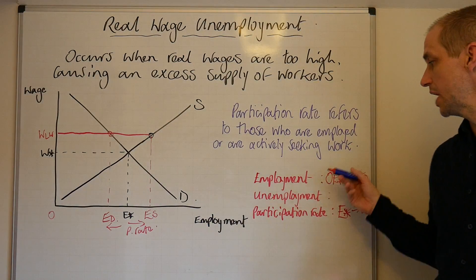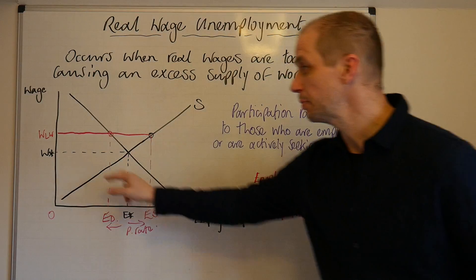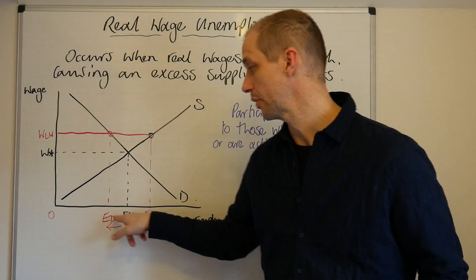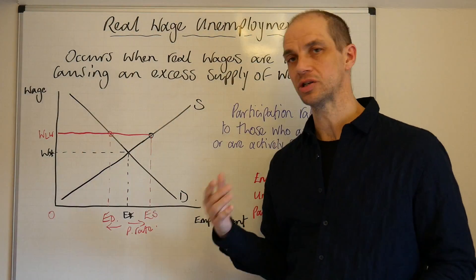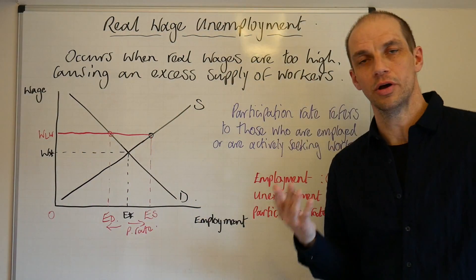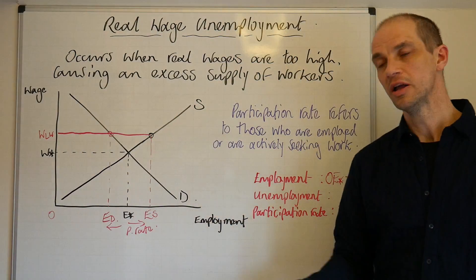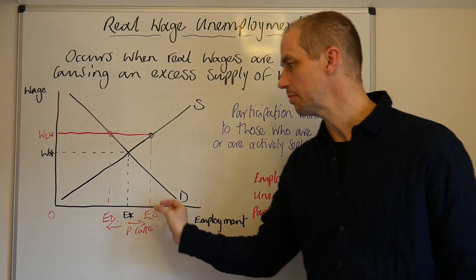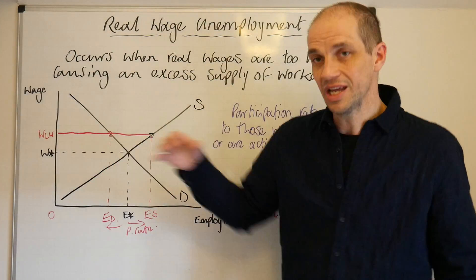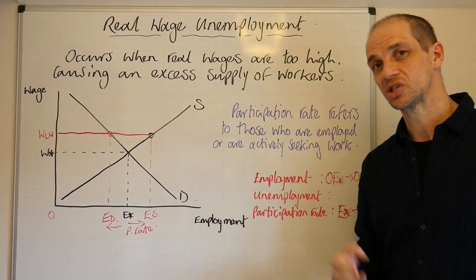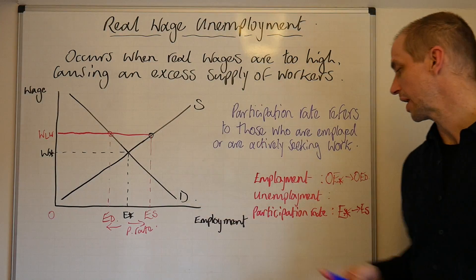For those people that remain in work — zero to ED — they're doing much better because they're earning more than they were at W*. So for some it works out very nicely, but for workers between E* and ED, this living wage does have a rather nasty impact.